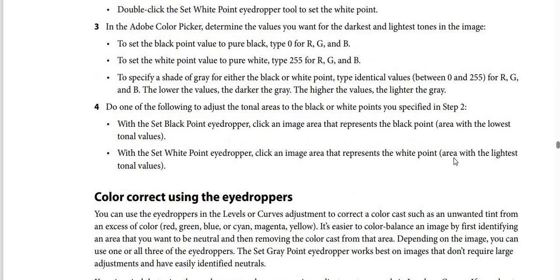To set the white point value to pure white, type 255 for R, G, and B. To specify a shade of gray for either the black or white point, type identical values between zero and 255 for R, G, and B. The lower the values, the darker the gray; the higher the values, the lighter the gray.